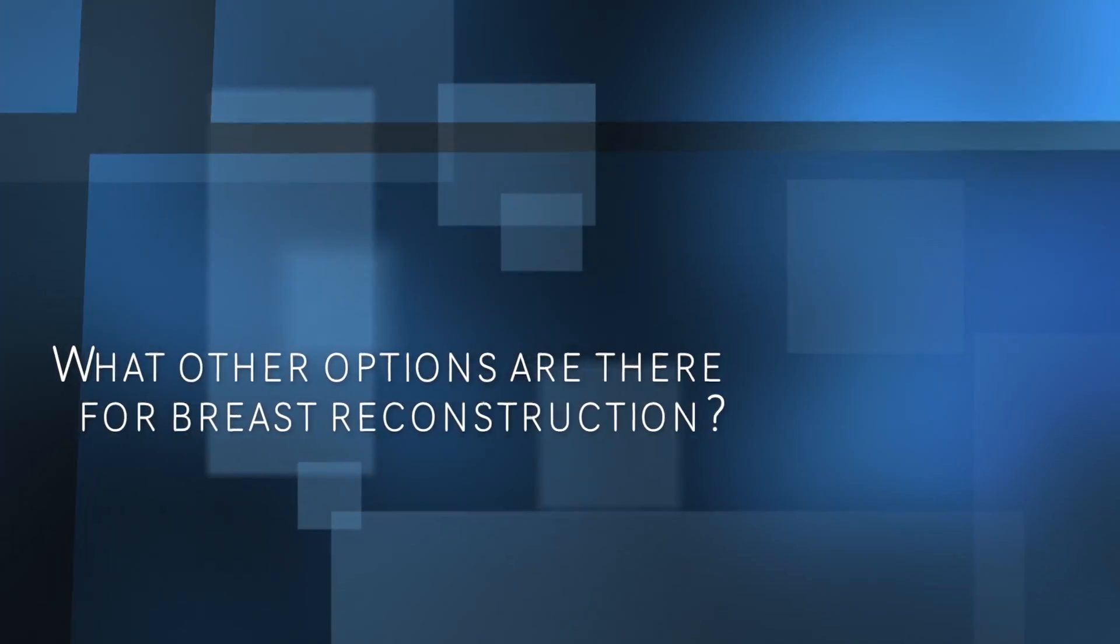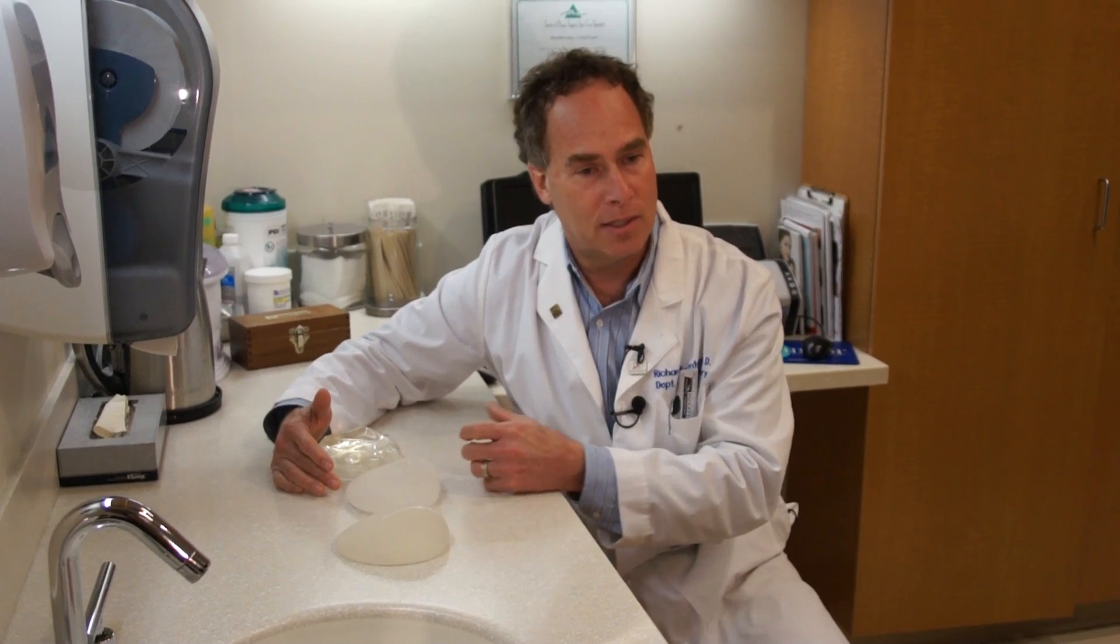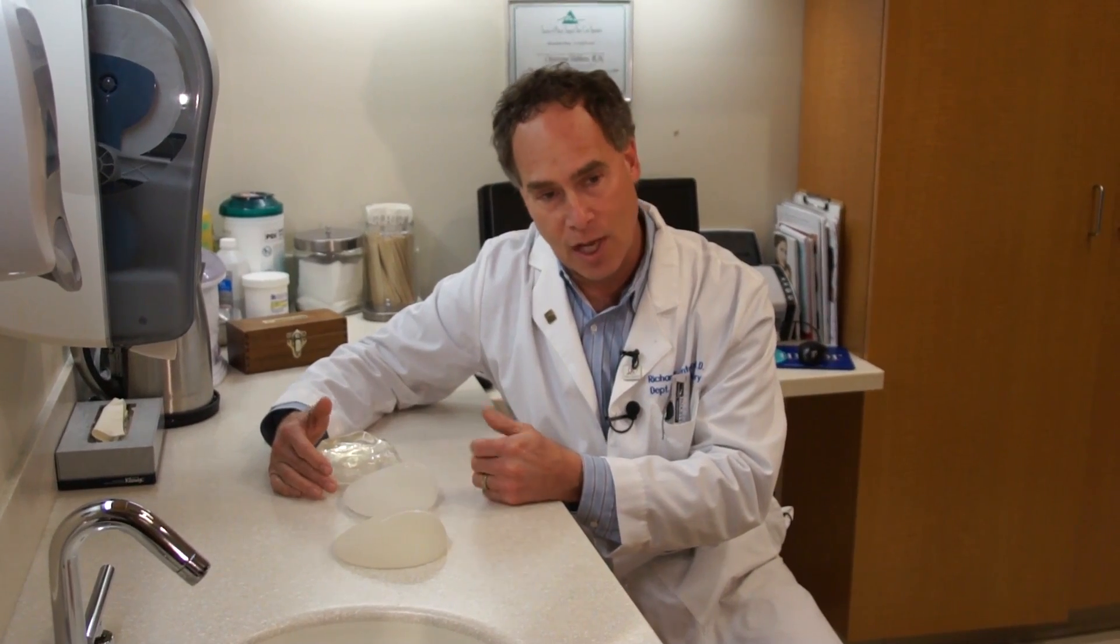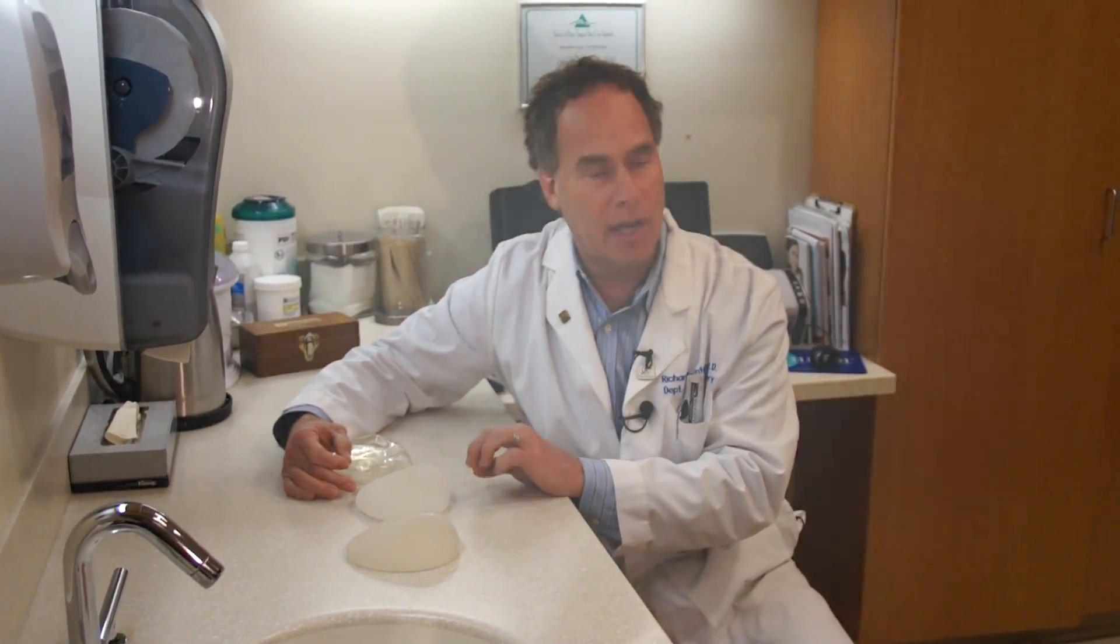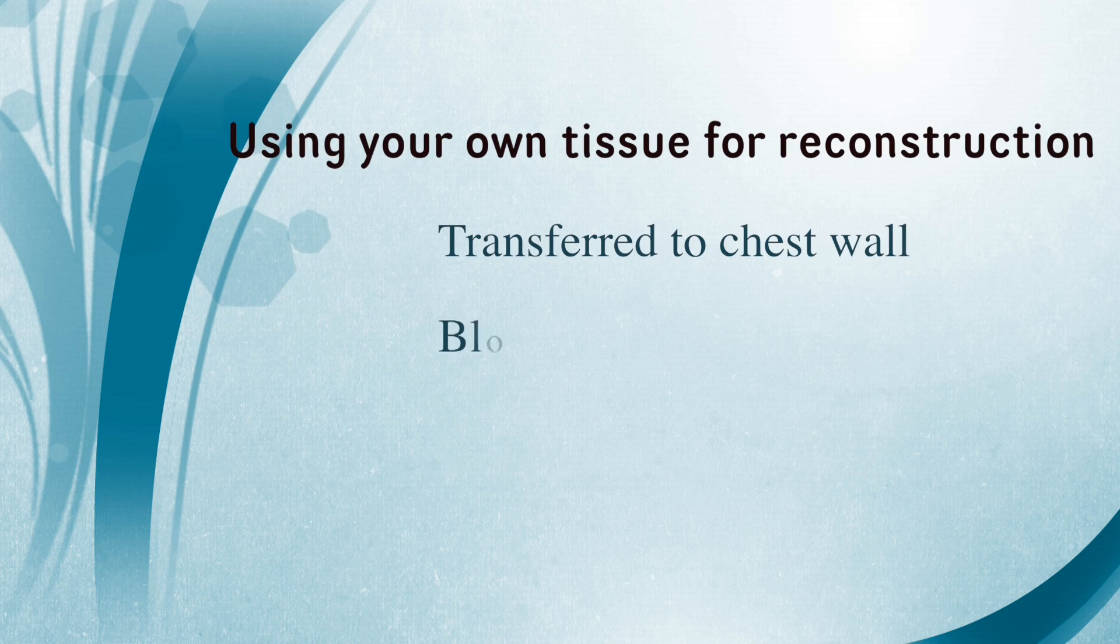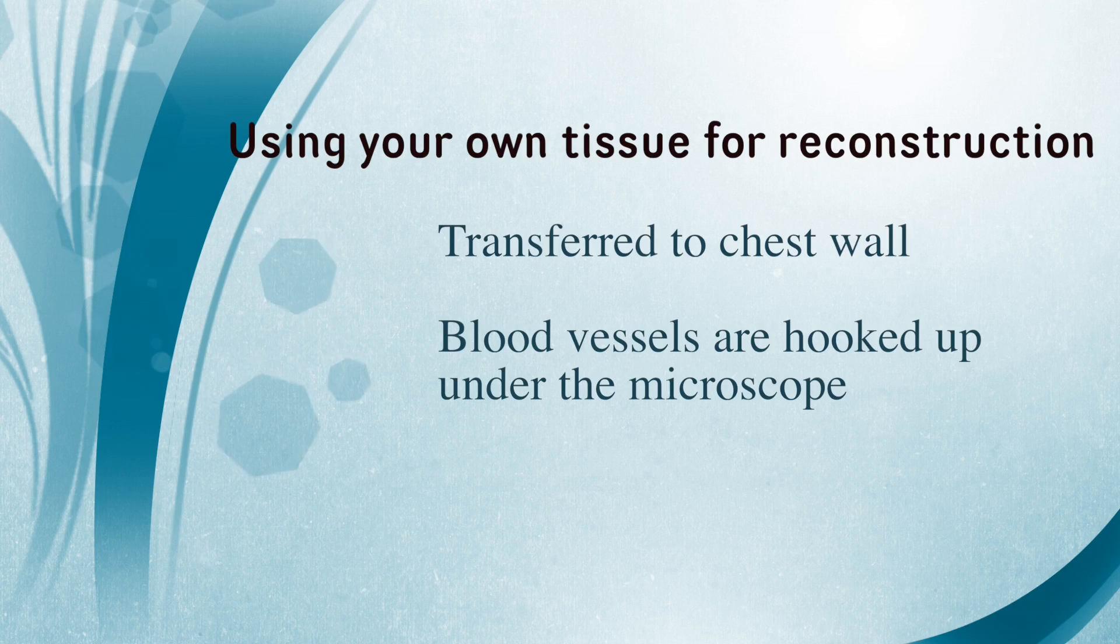We're able to do a form of reconstruction utilizing most commonly the tummy tissue in a woman or at times the inner thigh tissue. The tissue is isolated on very tiny little blood vessels. The tissue is then transferred up to the chest wall and the blood vessels are hooked up under the microscope, allowing that tissue to live.